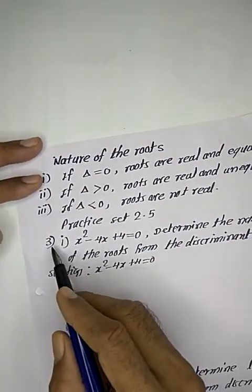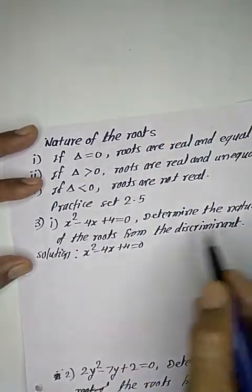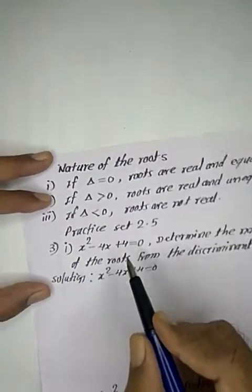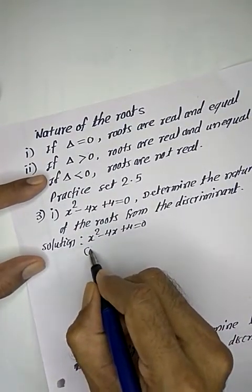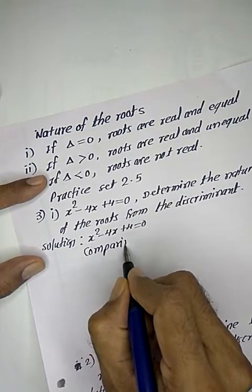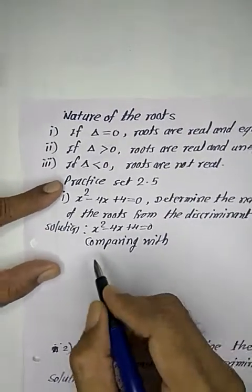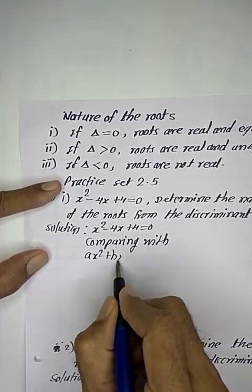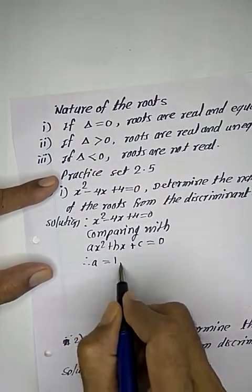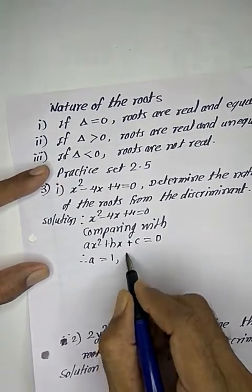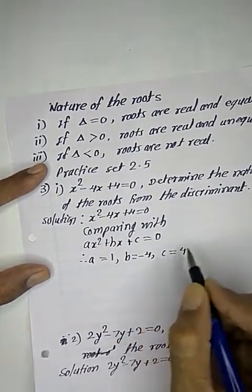This is Practice Set 2.5, the first equation: x² - 4x + 4 = 0. Determine the nature of the roots from the discriminant. Comparing with ax² + bx + c = 0, a is equal to 1, b value is -4, and c value is equal to 4.